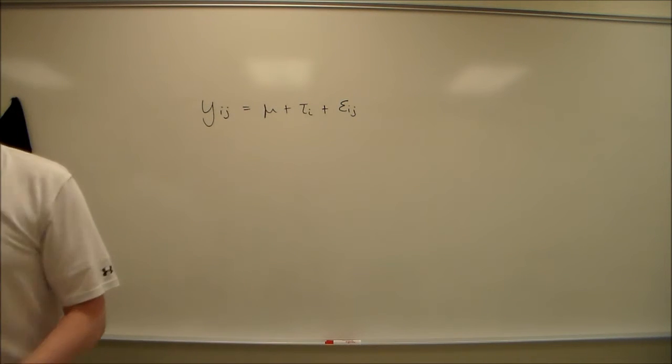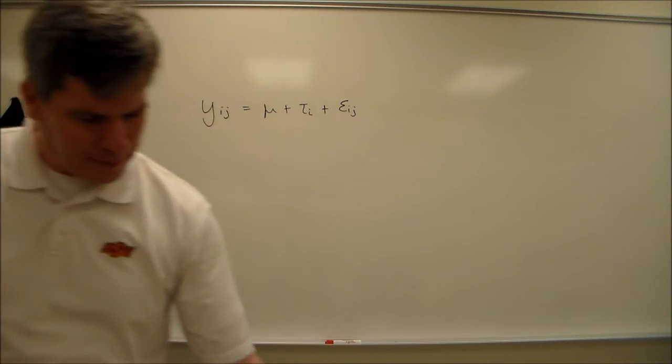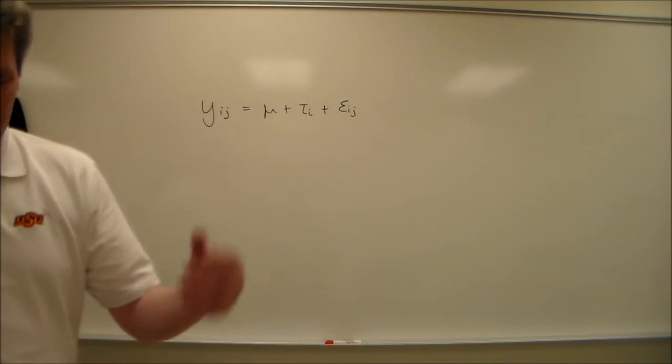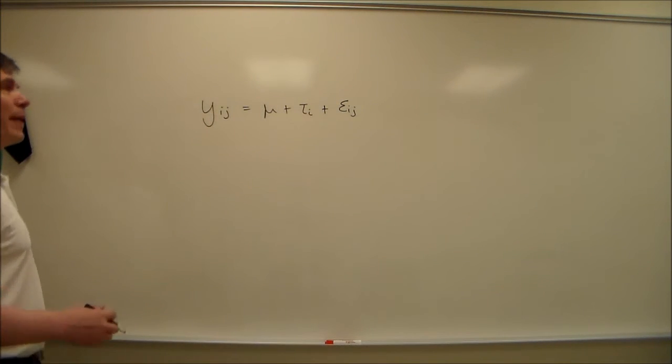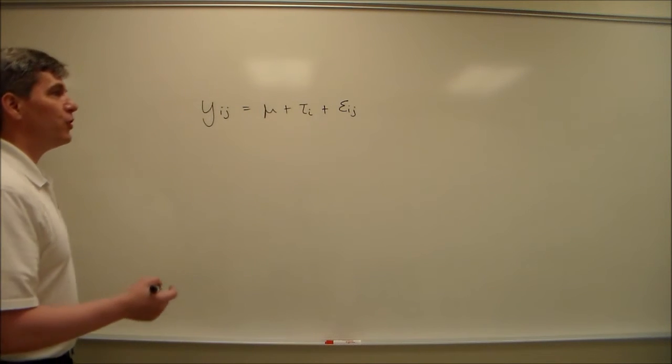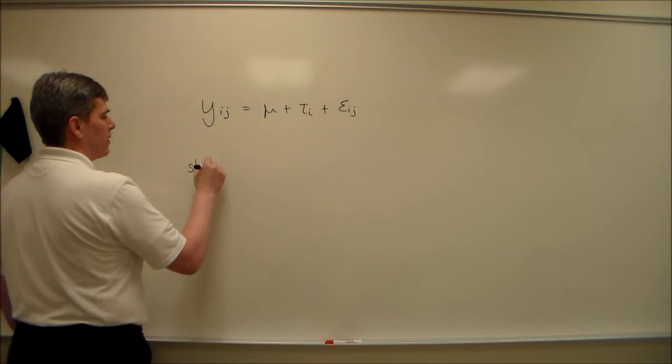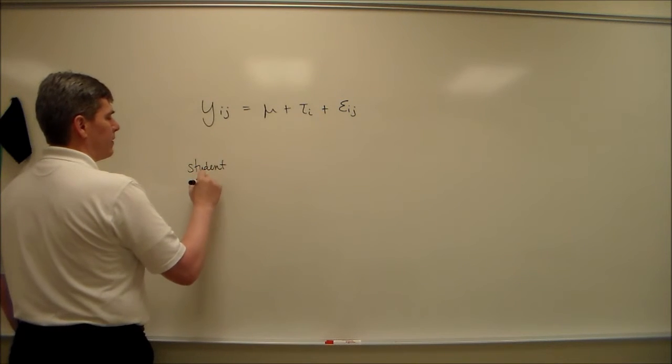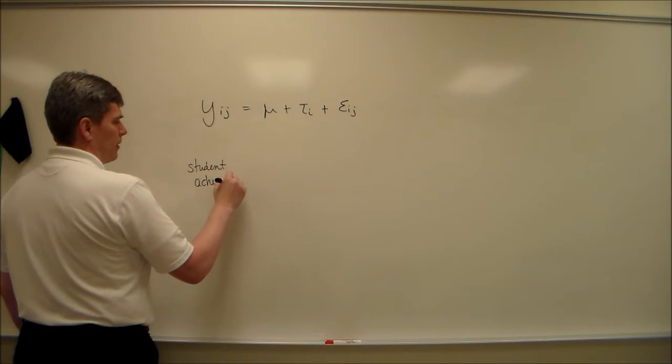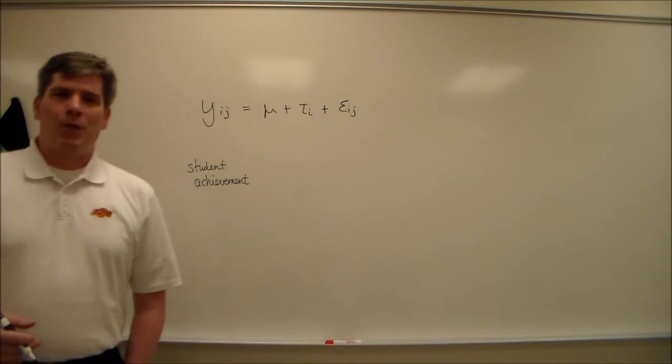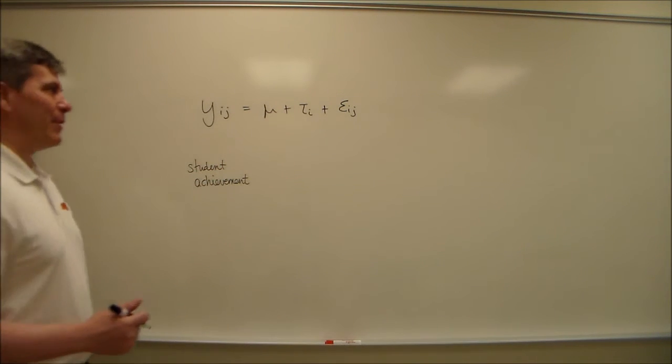Here's the setting. Do I have a good setting that we can use here? I don't know if we've got a setting. Let's go back and do the teacher thing. Student achievement. So this y sub ij student achievement. Don't know how that's getting measured, but let's pretend that we know.